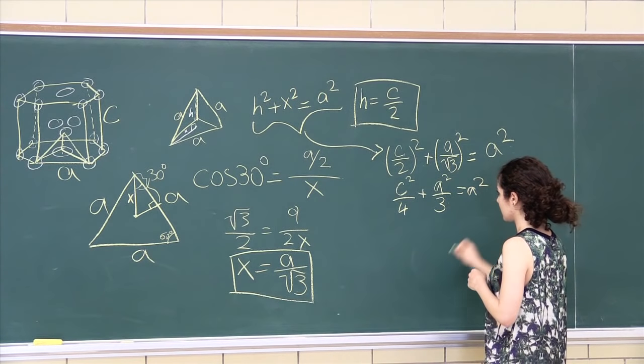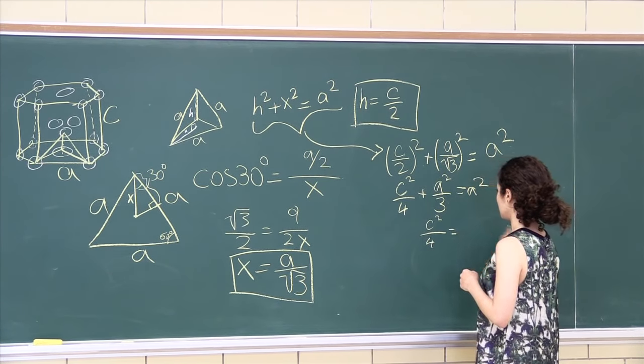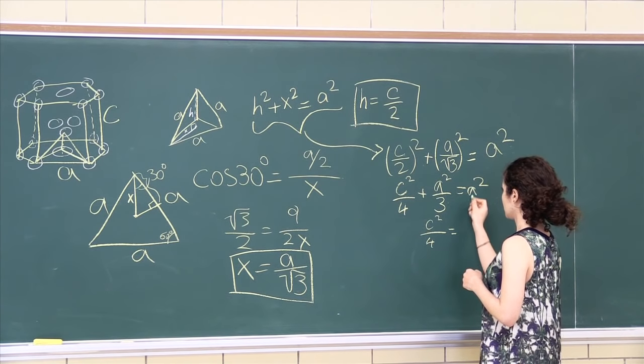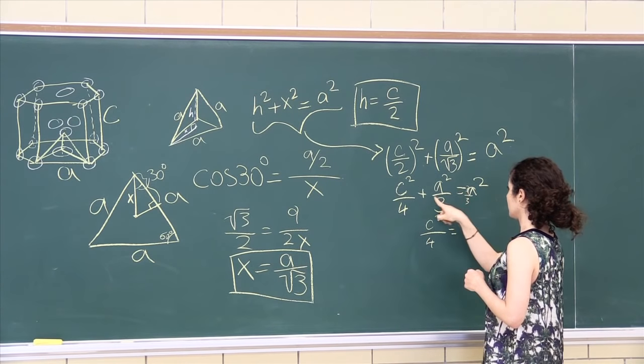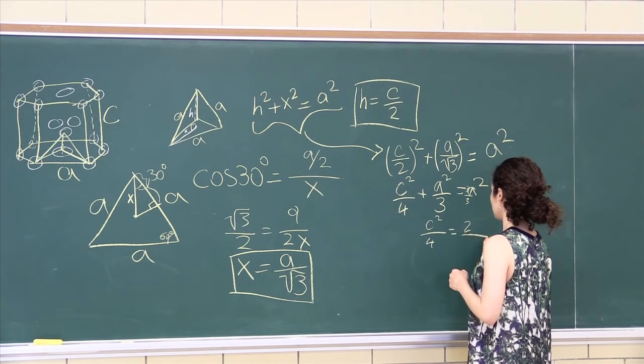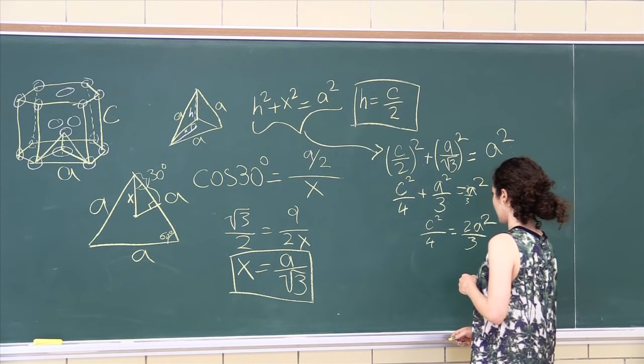Take this to the other side, C² over 4 is equal to, let's say, 3 over 3, 3 minus 1, 2 over 3, A². Alright,